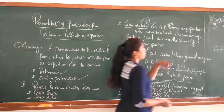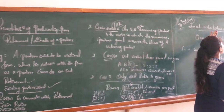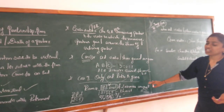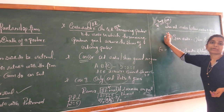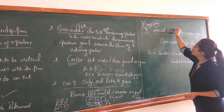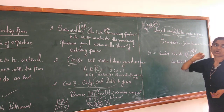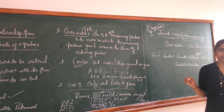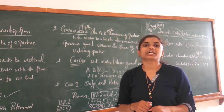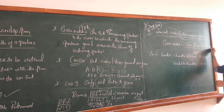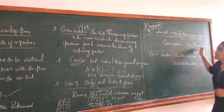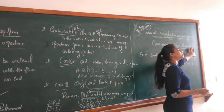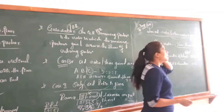The third case: both the old ratio and the new ratio are given. In this case, we use the formula to find the gain ratio. The formula for the gain ratio is: gain ratio equals new share minus old share. So each remaining partner's gain is calculated as their new share minus their old share.